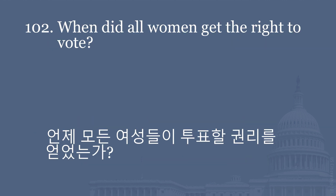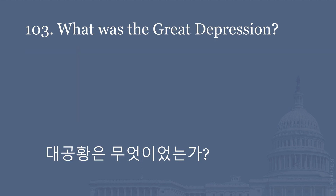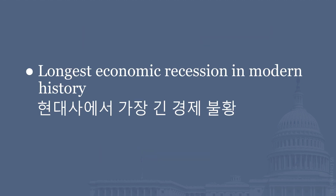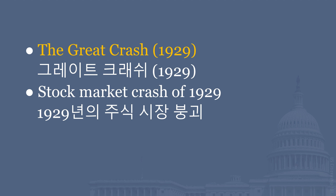When did all women get the right to vote? 1920. After World War I. With the Nineteenth Amendment. What was the Great Depression? Longest economic recession in modern history. When did the Great Depression start? The Great Crash, 1929. Stock Market Crash of 1929.